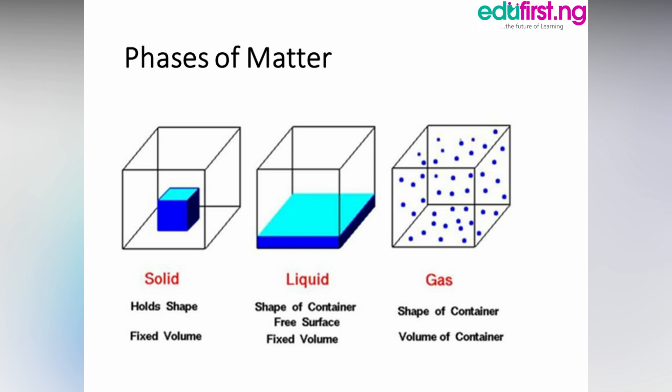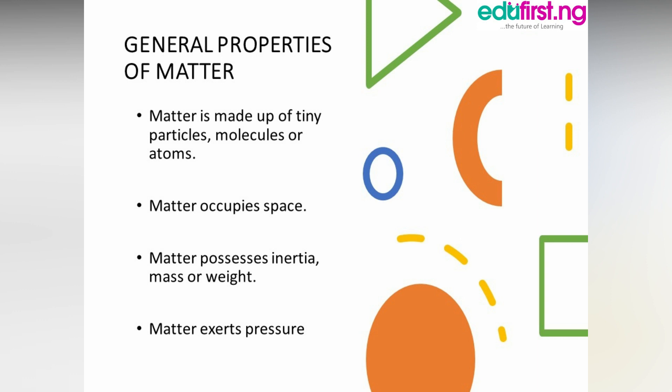Now the general properties of matter. I'm going to tell us the four properties of matter. One, matter is made of tiny particles — molecules or atoms. Two, matter occupies space. Three, matter possesses inertia, mass, or weight. Four, matter exerts pressure.